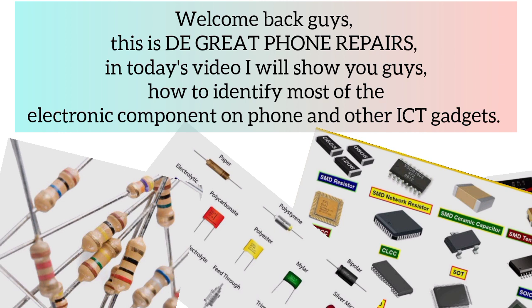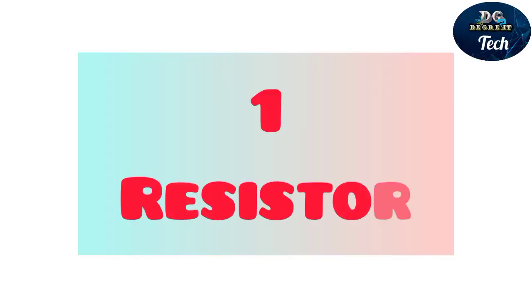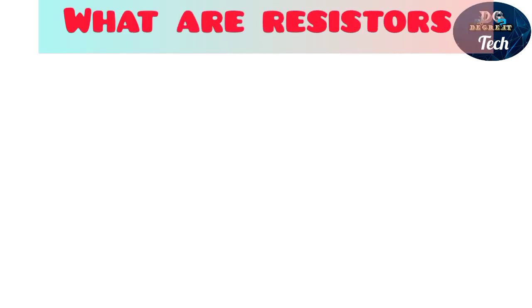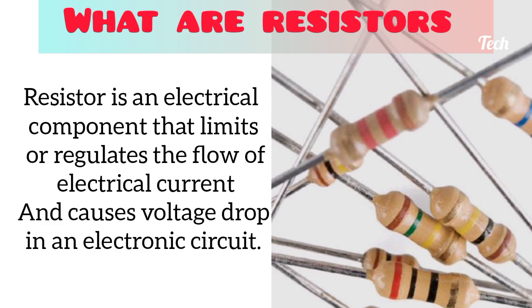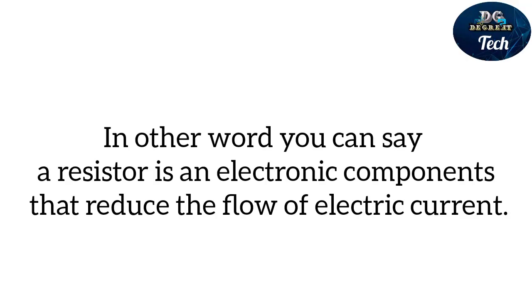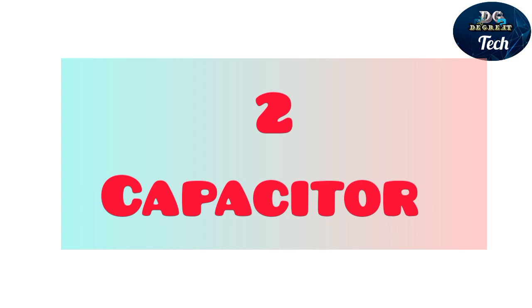Welcome back guys, this is Great Phone Repairs. In today's video I will show you guys how to identify most of the electronic components on phones and other ICT gadgets. Number one: resistors. A resistor is an electrical component that limits or regulates the flow of electrical current in an electronic circuit. In other words, it is an electronic component that reduces the flow of electric current.